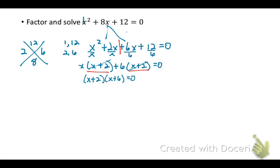So that is factored form. Now to solve I set each of those equal to 0. And my two solutions are x equals negative 2 and negative 6. So if I were graphing this parabola it would open up and it would cross the x-axis at negative 2 and negative 6.